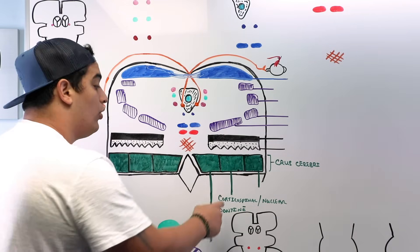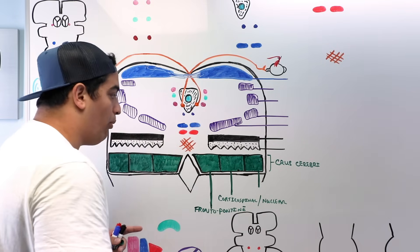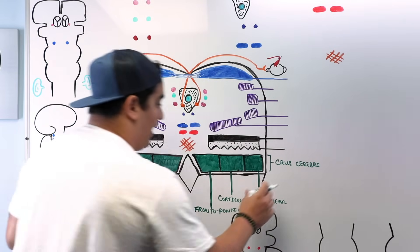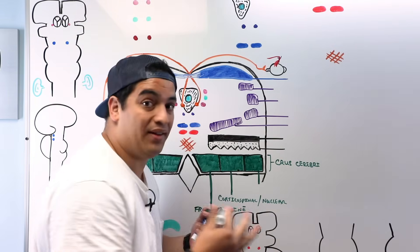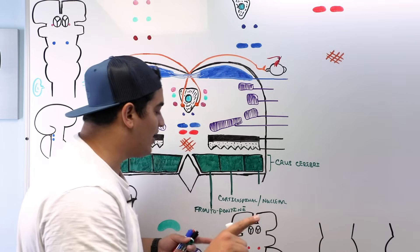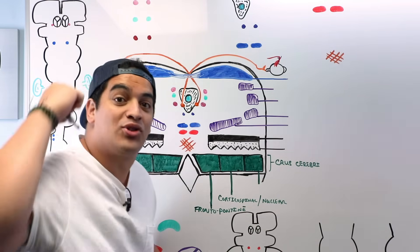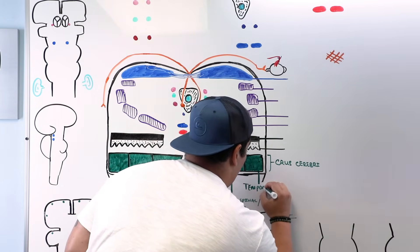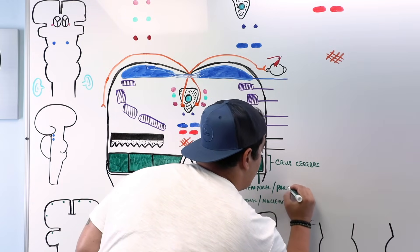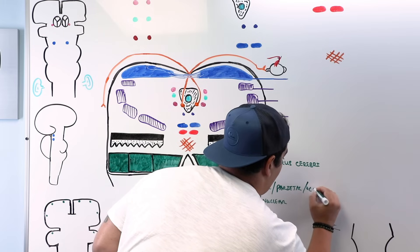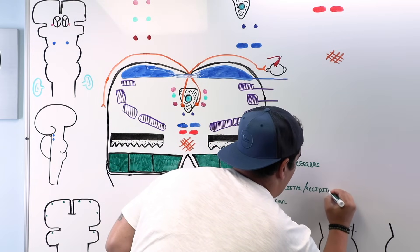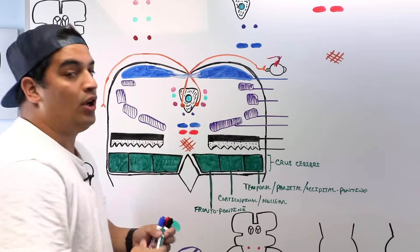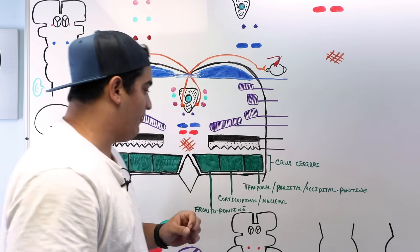The most lateral portion of the crus cerebri is made up of other corticopontine fibers, but these come from the temporal, parietal, and occipital lobes rather than the frontal lobe.